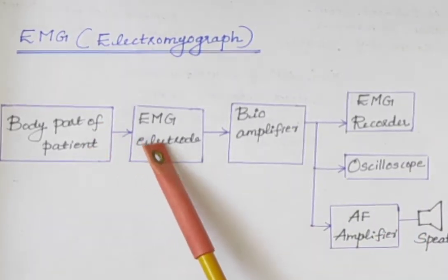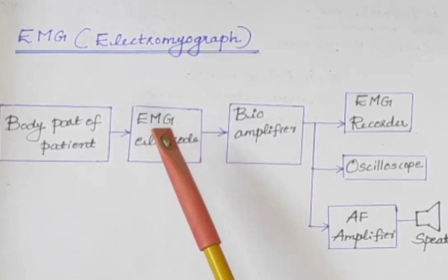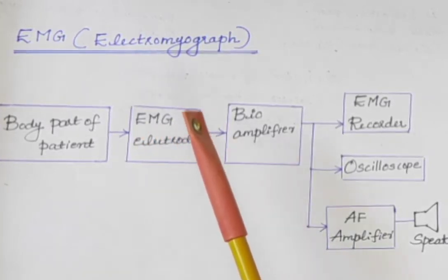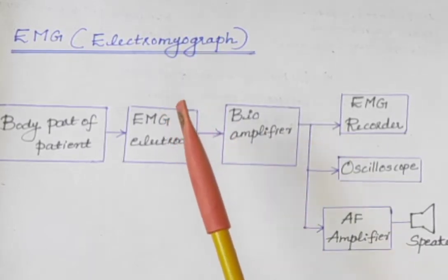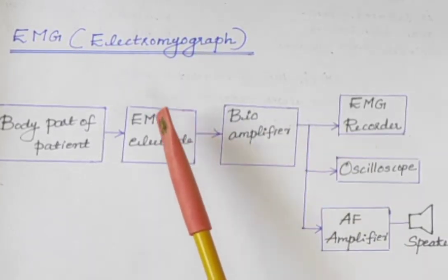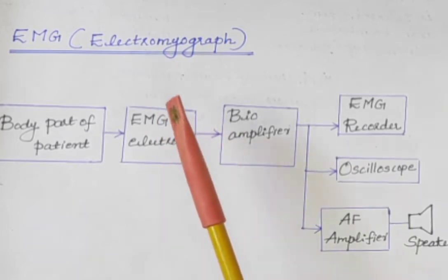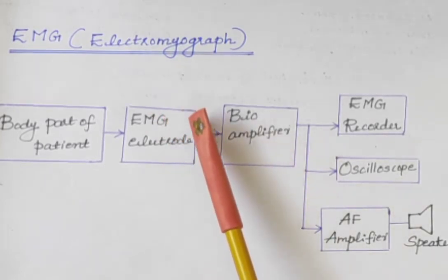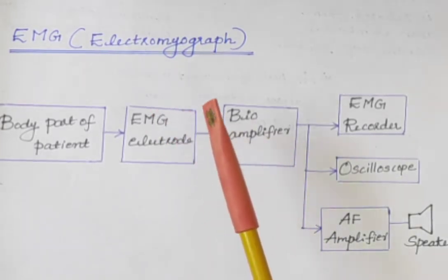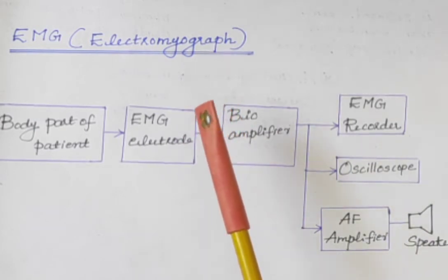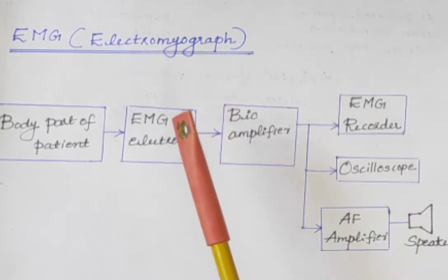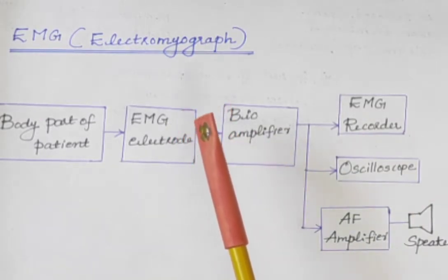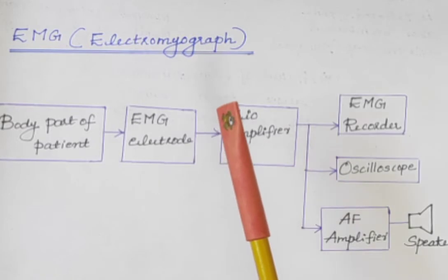As I said earlier, the electrodes used for EMG recording can be surface type or needle type depending on the area from which EMG is to be obtained. Surface EMG electrodes are used to monitor electrical activity of muscles whereas needle electrodes are used to observe electrical activity of two or three fibers.